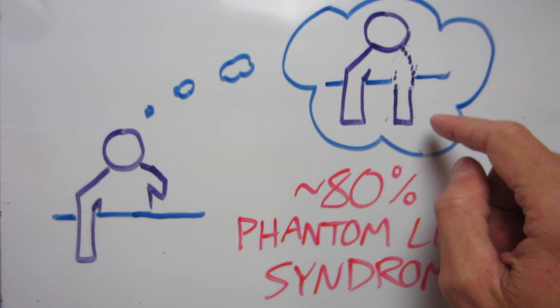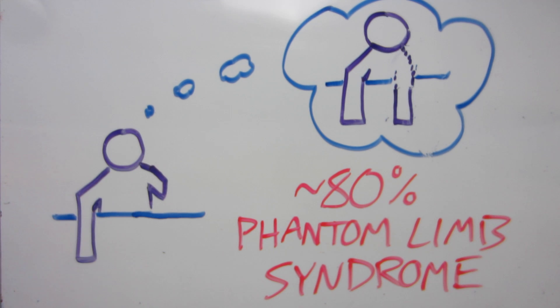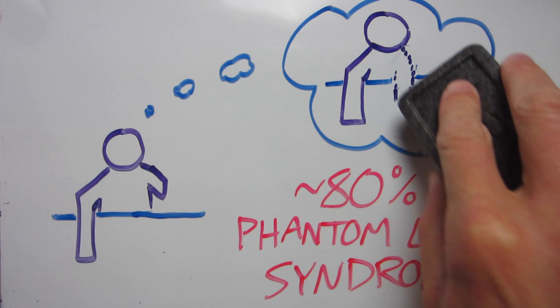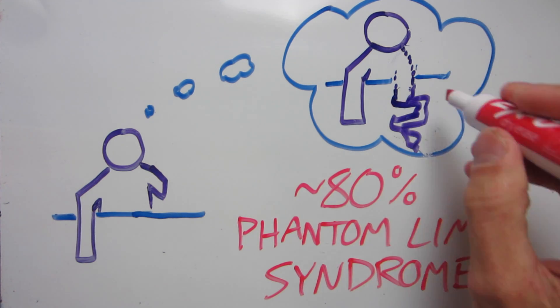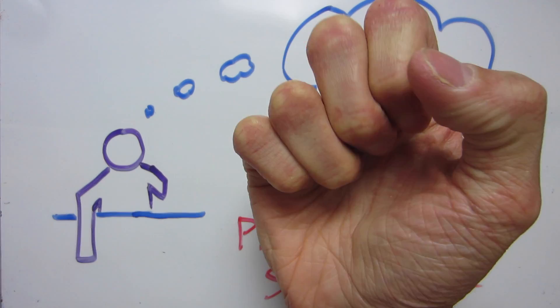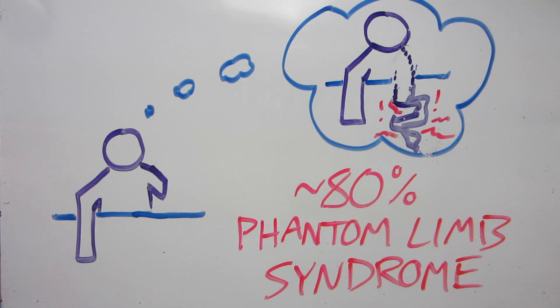The lingering sensations from these phantom body parts can be benign or even pleasant, like tingling or warmth, but patients can also experience constant, inescapable sensations of cramping, burning, twisting pain. These sensations are incredibly convincing, some even reporting they can feel their phantom fingernails digging into their palms. Somehow the loss of bottom-up feedback from their missing limb has resulted in a runaway failure of self-perception.